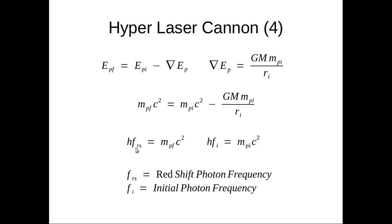If we go a little further we say hfrs, which is the final frequency, equals mpf c squared. hfi equals mpi c squared. So initial mass of photon, final mass of photon, initial frequency, redshift frequency.